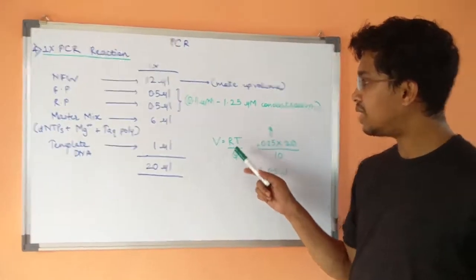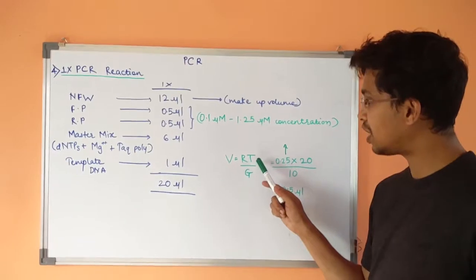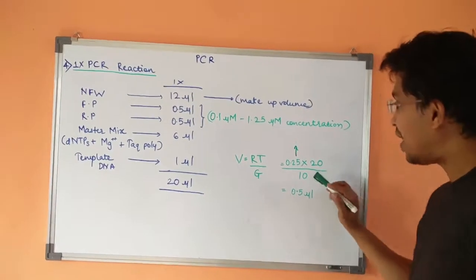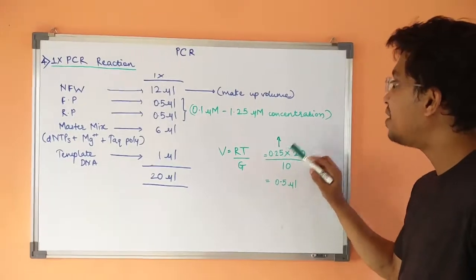V stands for volume, R stands for required concentration, T stands for total volume, G stands for given concentration. My required concentration is 0.25 micromolar.